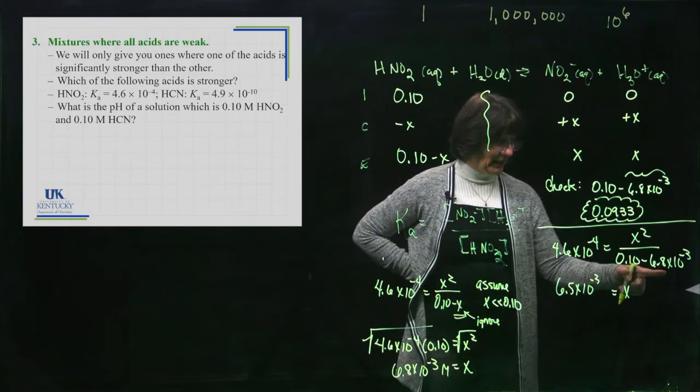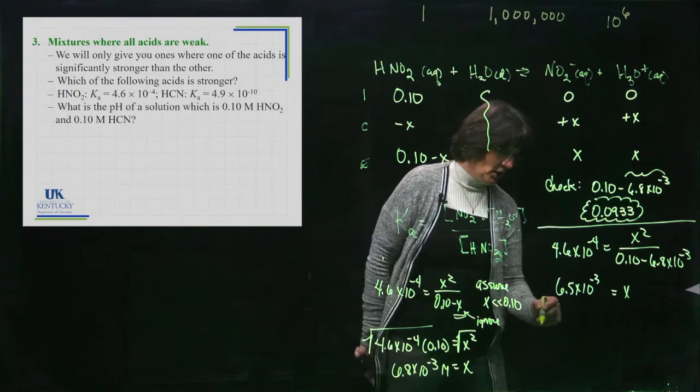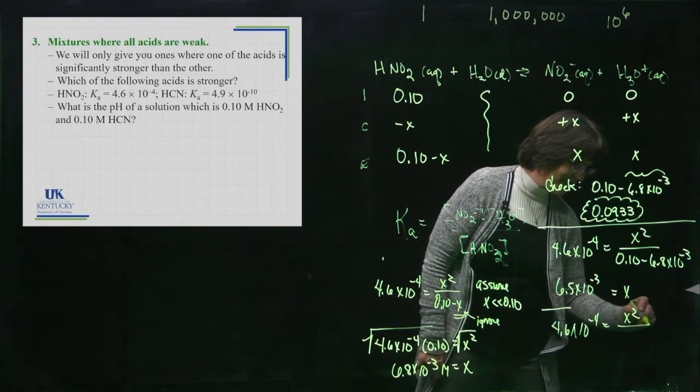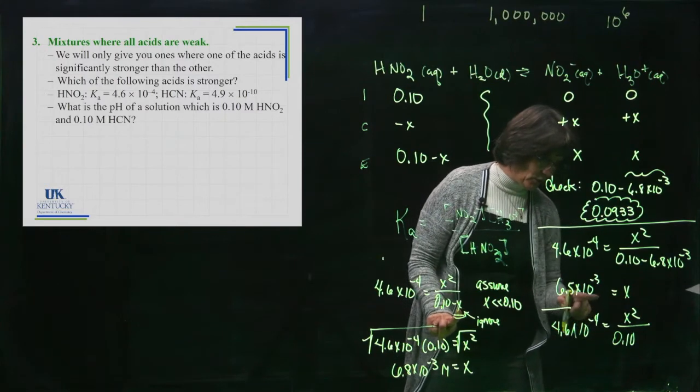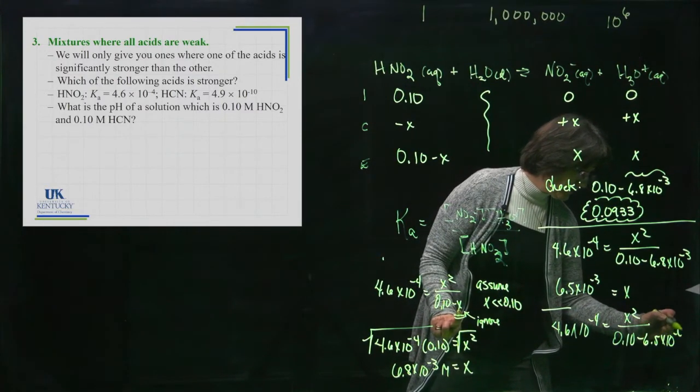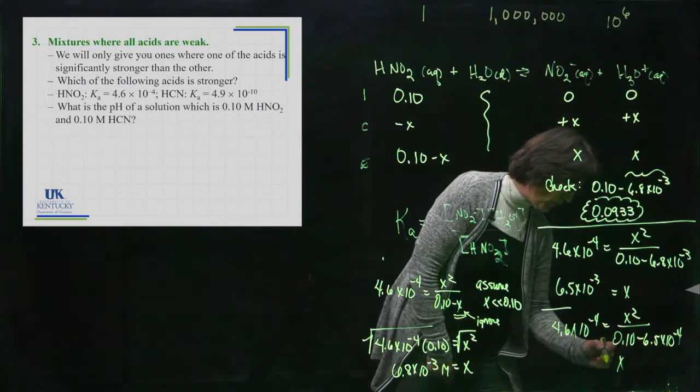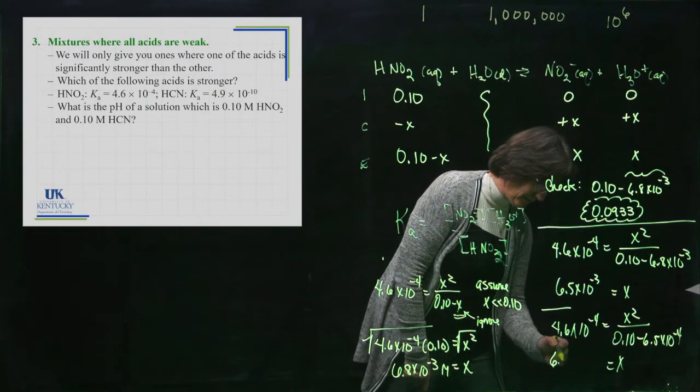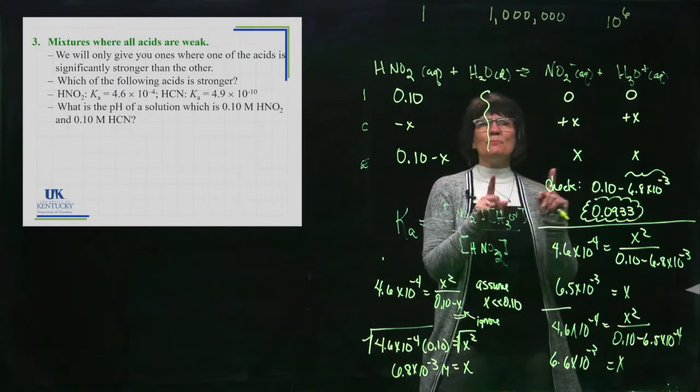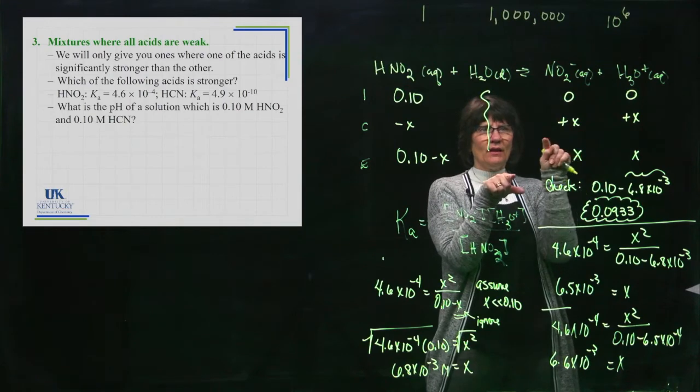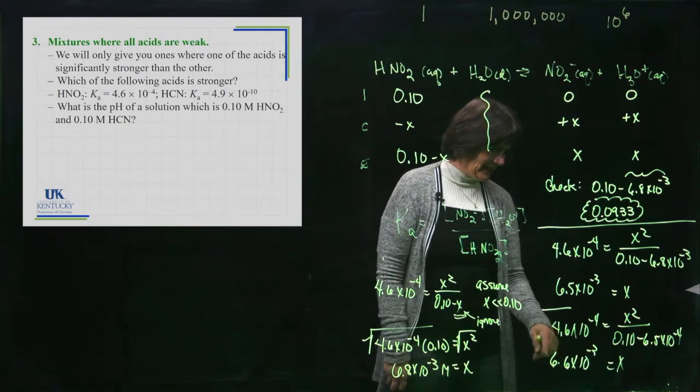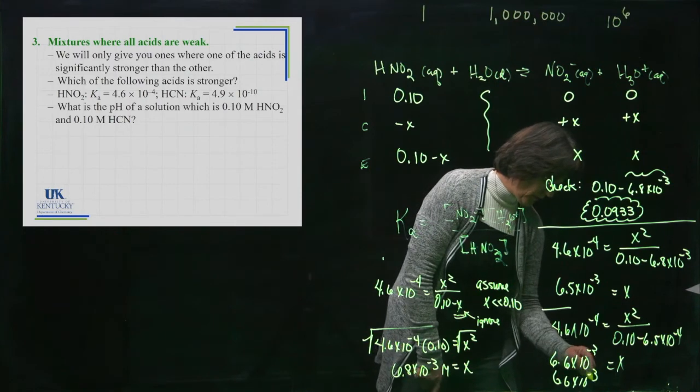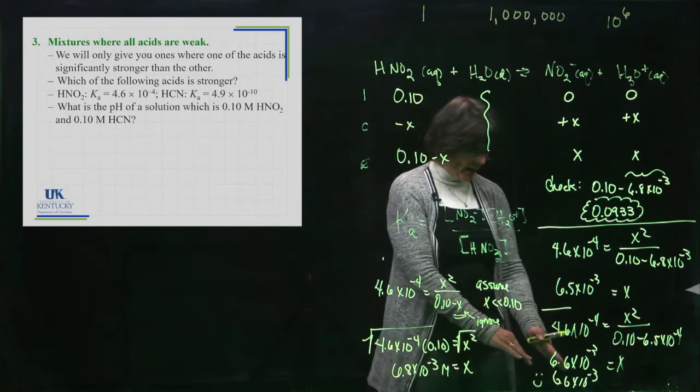The next time, I'm going to take this X and plug it in here. I take the 4.6 times 10 to the minus 4, and in place of where the X was, I'm going to put this new X. When I solve for X for this one, I'm going to end up with 6.6. Changed a little bit again. So what it does is it bounces, it hits and bounces on the other side and gets closer and closer until it keeps giving you the same value. I did this one more time and I saw that it didn't change. It got 6.6 times 10 to the minus 3 again. I like that number.